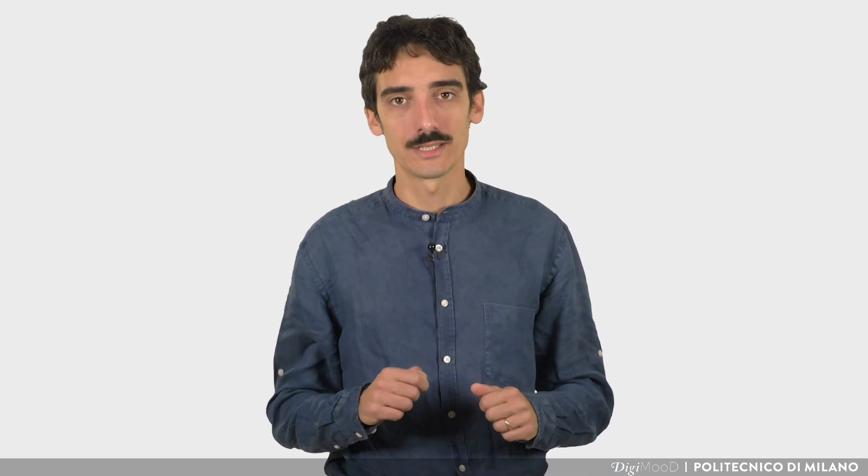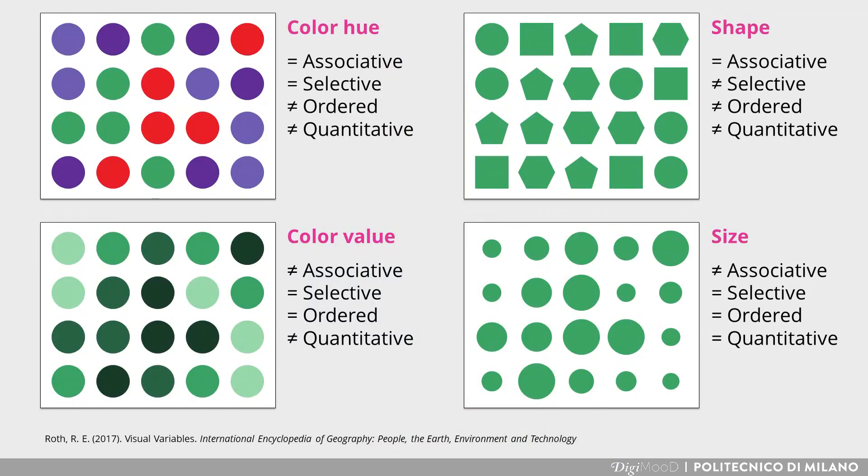Let's take some other visual features. Here, for example, we are looking to four ways of encoding information on a grid of markers. Look at the top-left one. The color hue is very powerful in communicating groups of markers, but it fails in communicating a reading order or quantities.